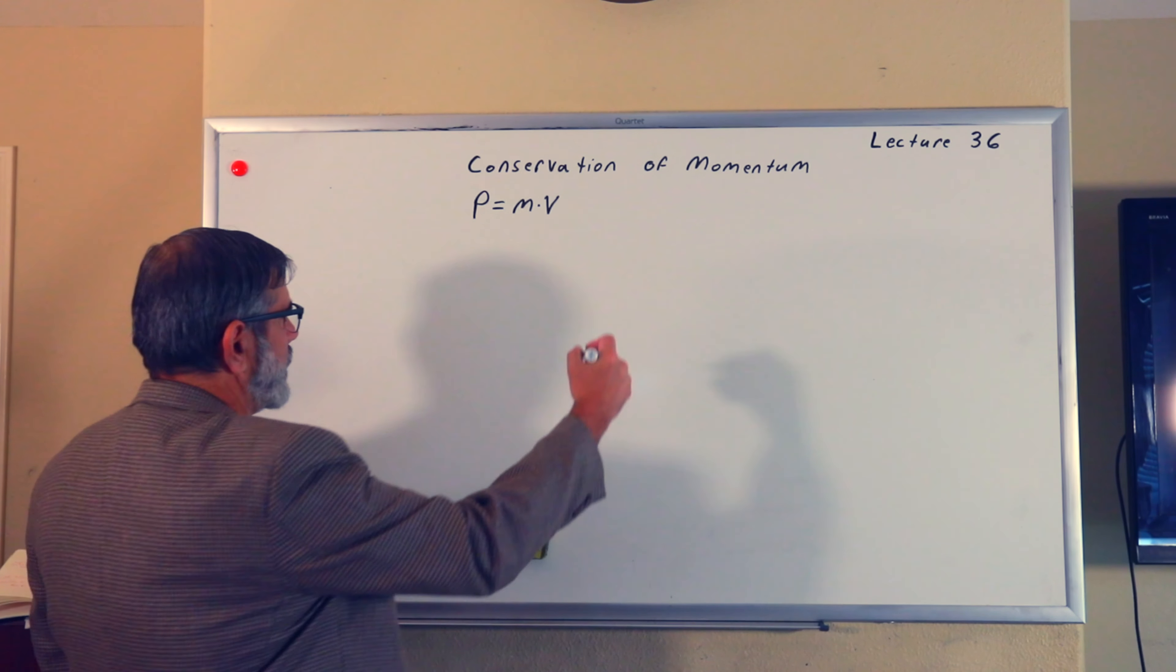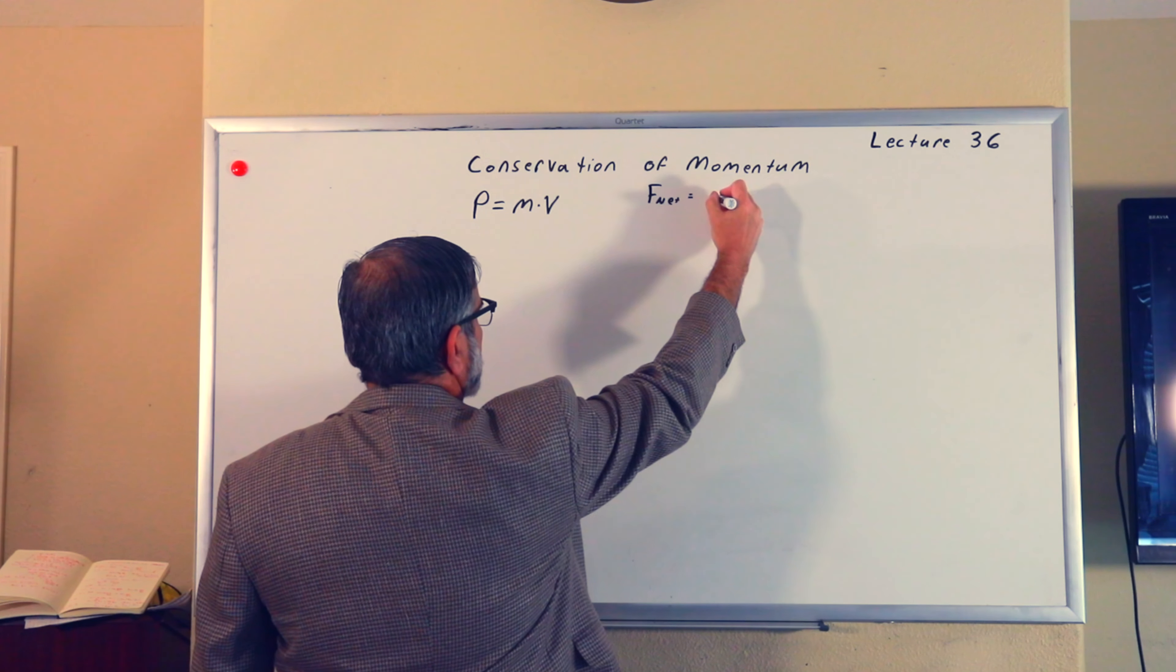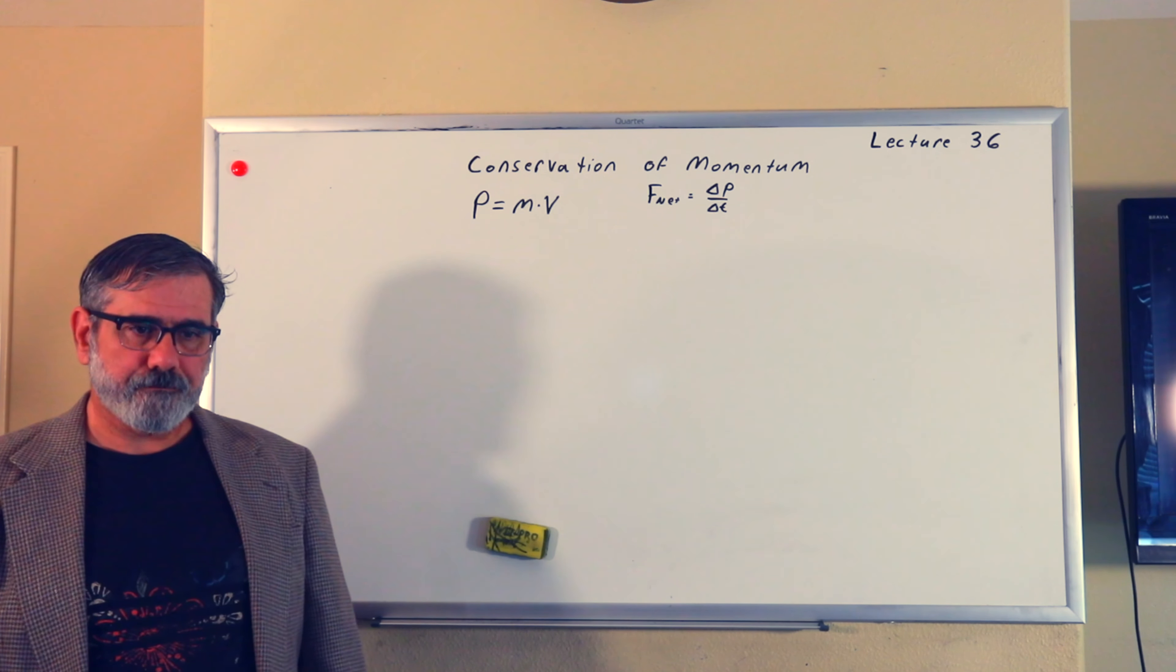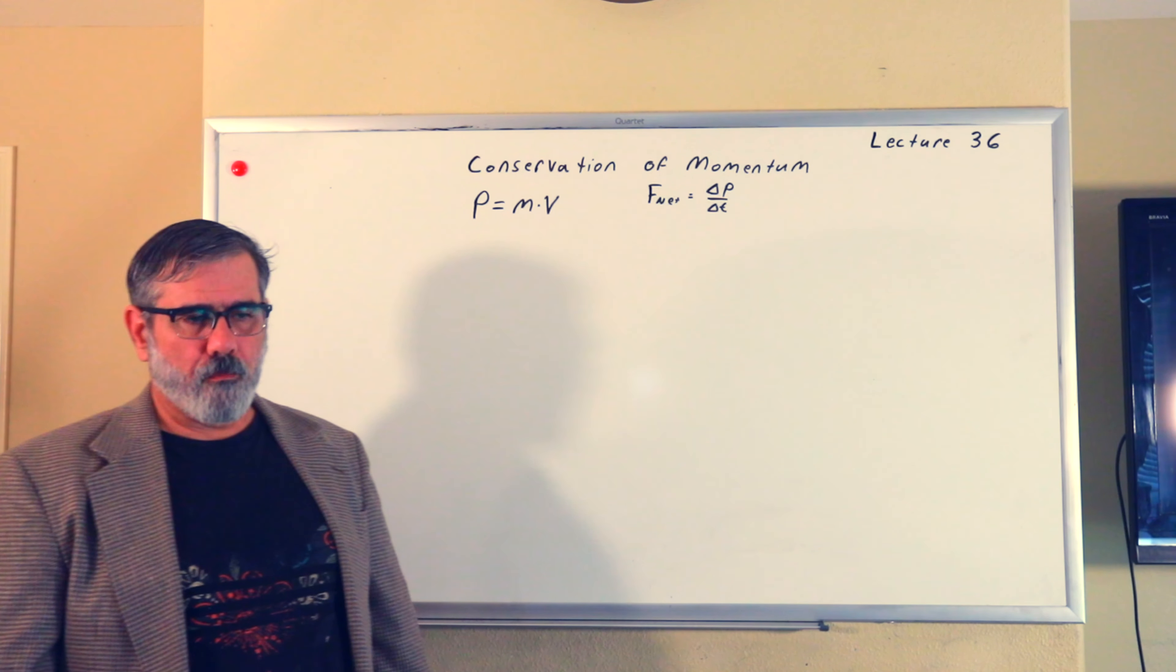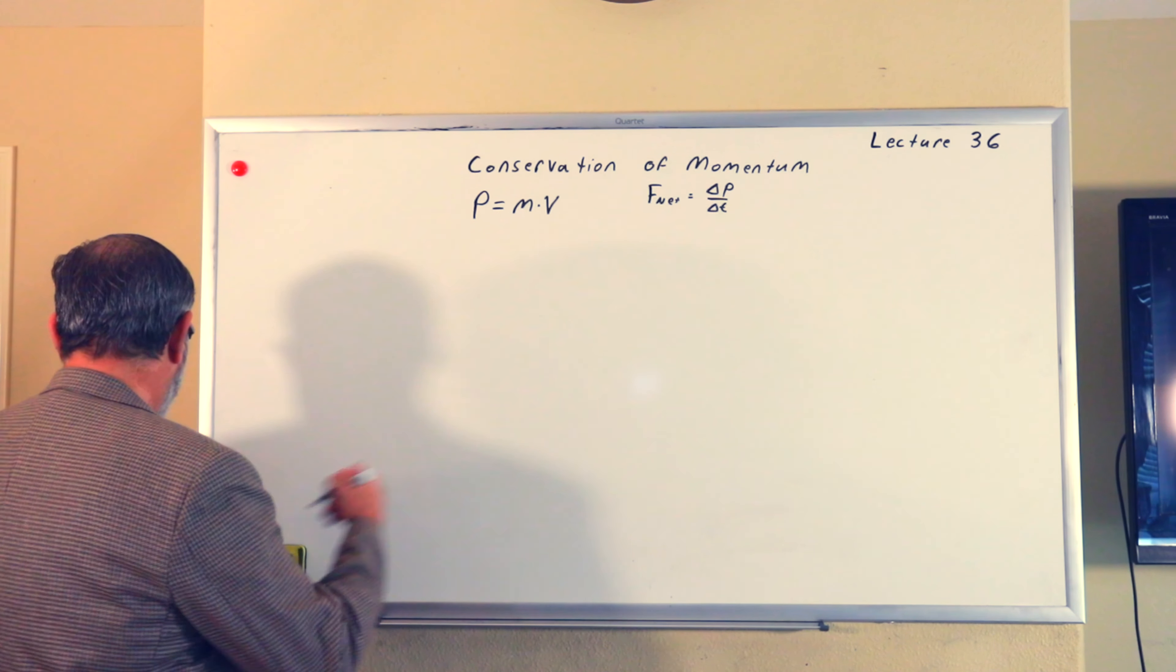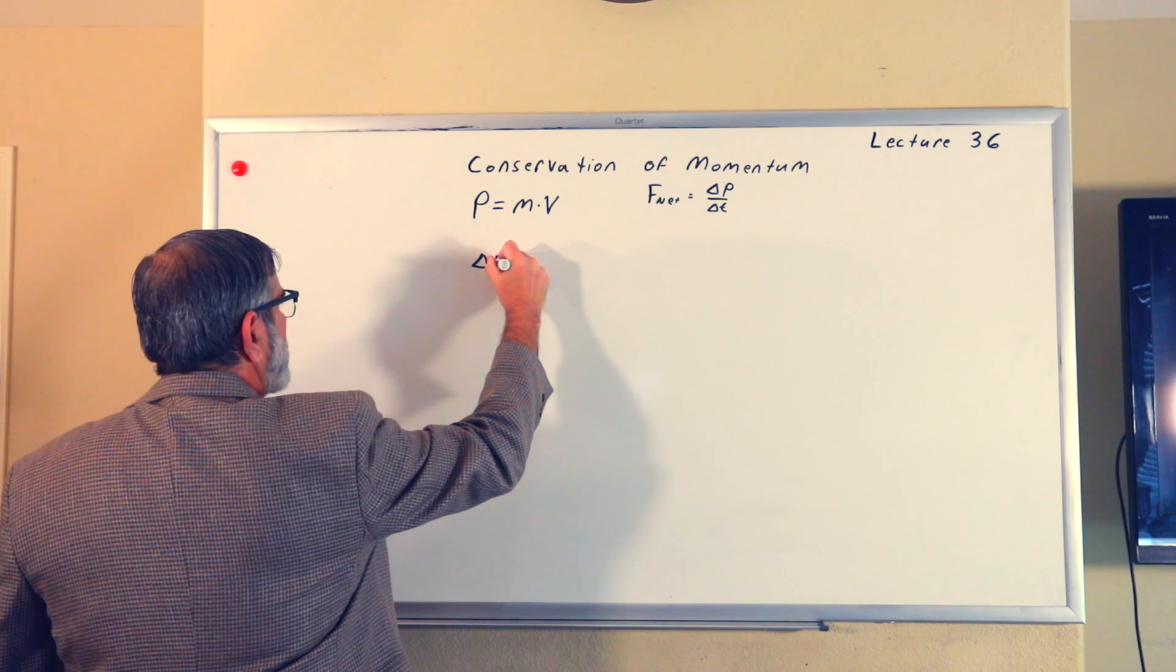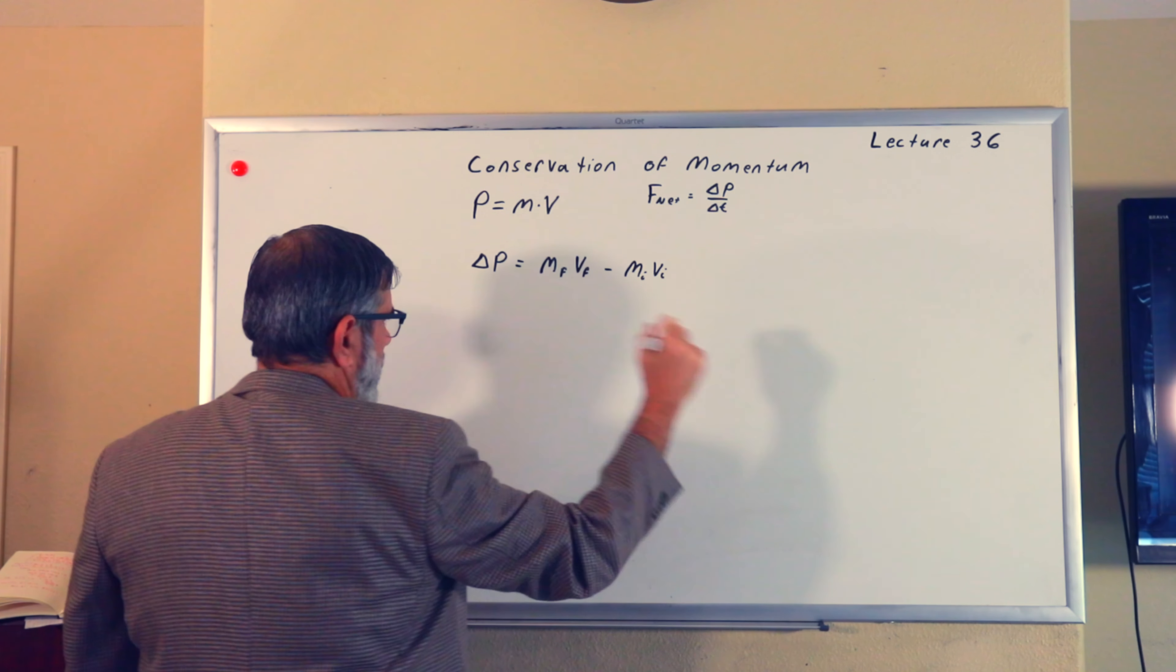You may also recall that we said Newton's second law can be stated as the net force equals delta P over delta T. This is slightly different than our F equals MA version of it. We'll talk about this more later when we discuss relativity in a not-so-far-off lecture. Delta P delta T is the change in momentum versus the change in time. What does delta P mean? Delta P means final mass times the final velocity minus the initial mass times the initial velocity.